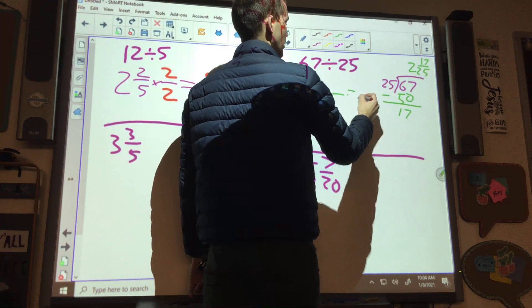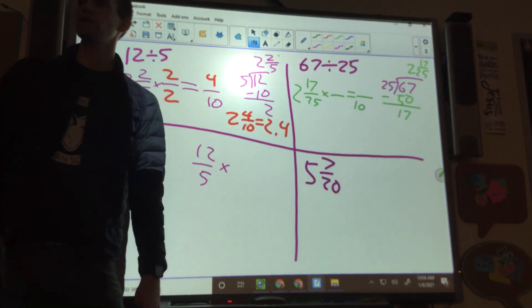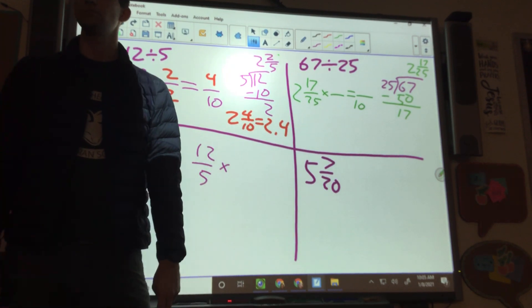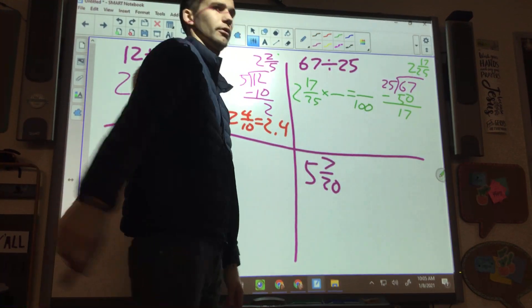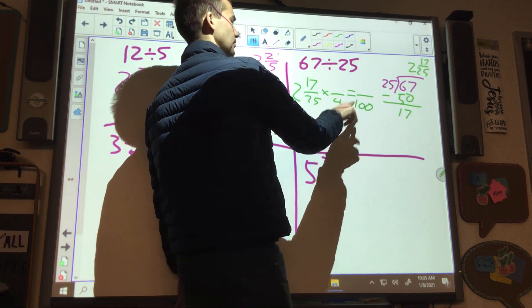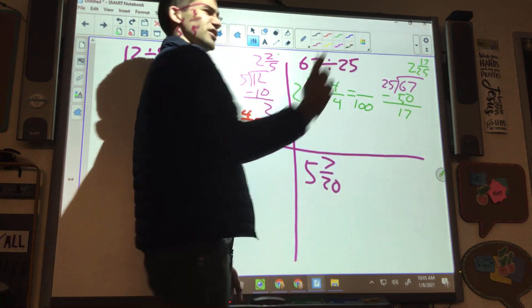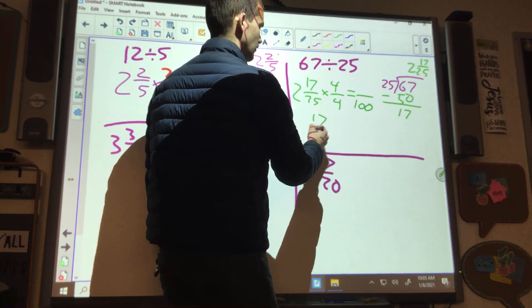We have to multiply by a fraction to get it over 10 or 100. Can we do 25 times something to get 10? No. No, we can't. Can we do 25 times something to get 100? Yeah. Which number? 5. No, 4. 4. 4 is on the bottom and it needs to be on the top. What's 17 times 4? Do you know off the top of your head? No. Me either.